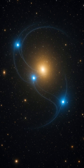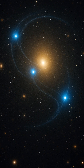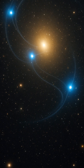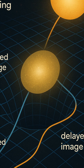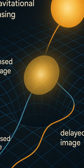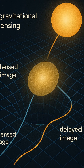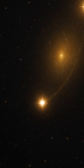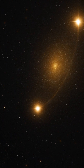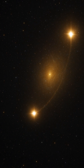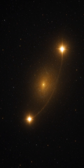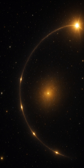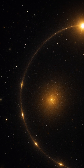What is a relativistic time delay? In the vast theater of the cosmos, light often takes paths shaped not by straight lines but by the immense gravity of celestial giants. One fascinating consequence of this is the relativistic time delay, a phenomenon where light from a distant source, such as a quasar, takes slightly longer to reach us when it passes near a massive object. This effect, also known as the Shapiro Delay, emerges directly from Einstein's theory of general relativity, where gravity bends not only the path of light, but also warps the fabric of time itself.